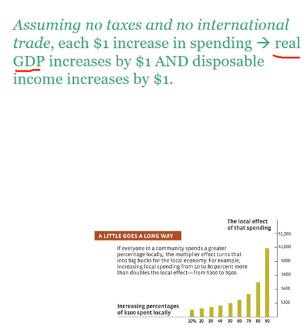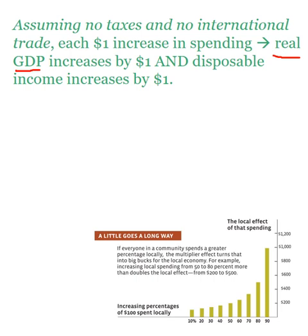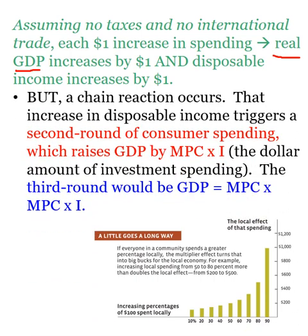So the original increase in spending leads to a real GDP increase. Real GDP shows us quantity — economy-wide quantity, which is output. So if output goes up economy-wide, that is the same as real GDP going up. That $1 in spending leads to $1 in output, which is $1 in real GDP. And the value of that stuff — someone's going to get paid — so it becomes another $1 in disposable income for households. The second round of spending is going to be consumer spending, because households receive that income.